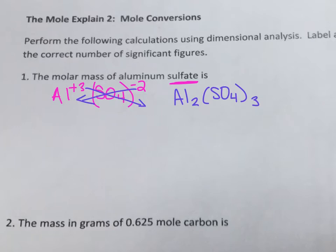On today's work at the end of the period, make sure you check your compounds to verify you're not getting the subscripts wrong before you start doing calculations. Otherwise all your answers will be wrong because you didn't know that you had two aluminums and three of those sulfate groups.